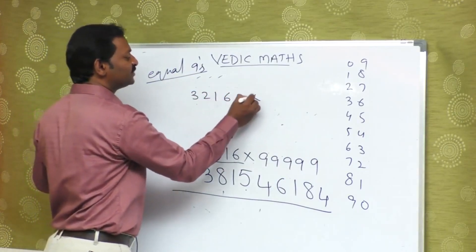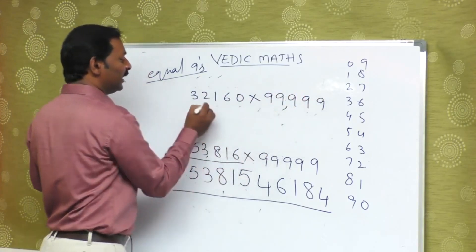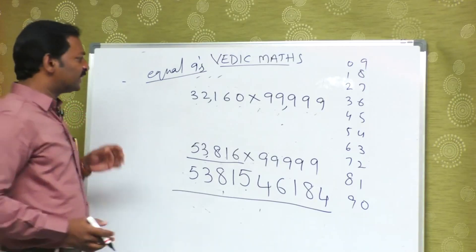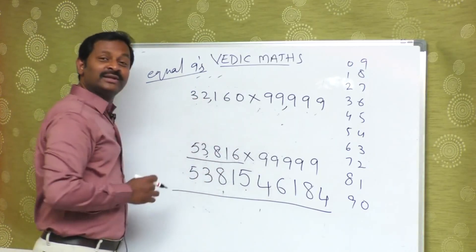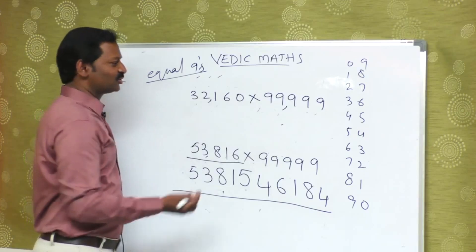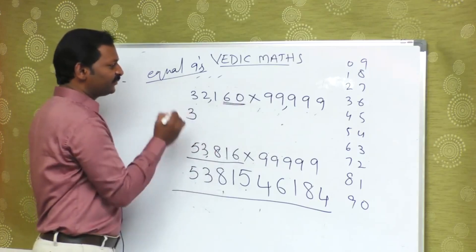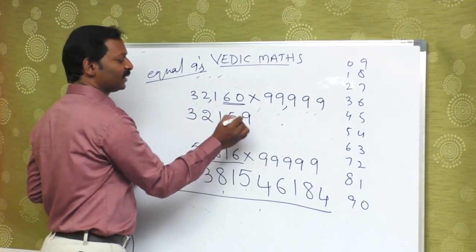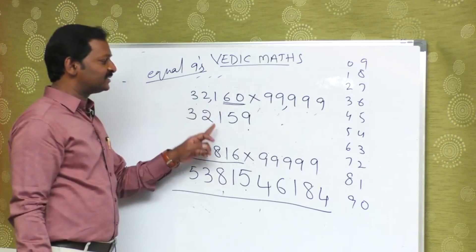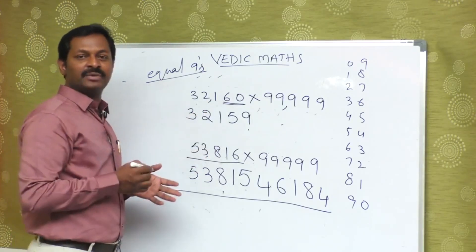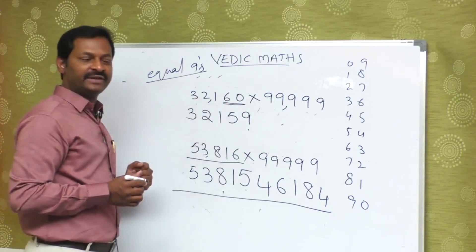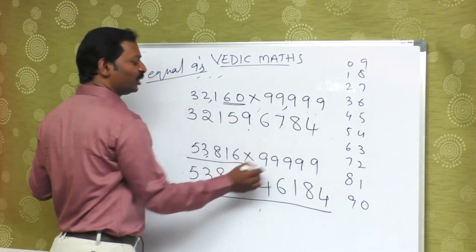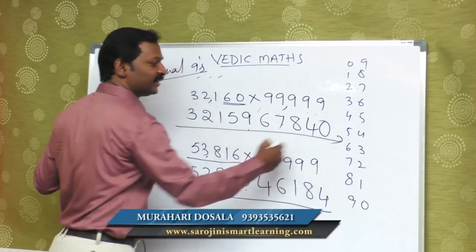Suppose 3, 2, 1, 6, 0 is multiplied by 9, 9, 9, 9, 9 — that's 5 digits times 5 nines. Now, the last digit is 0. We can't get a complement from 0 using 2 digits, so treat 16 as one number — its complement is 59, no wait, 15 is one number. So: 3, 2, 1 as it is, then 6, 0. The complement of 3 is 6, complement of 2 is 7, complement of 1 is 8, complement of 5 is 4, and complement of 9 is 0. This is the right answer. Hope you understood the concept of 9.